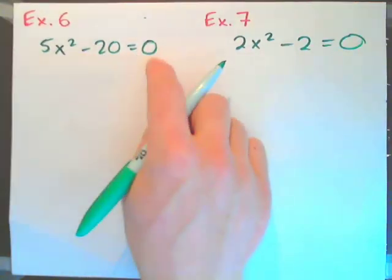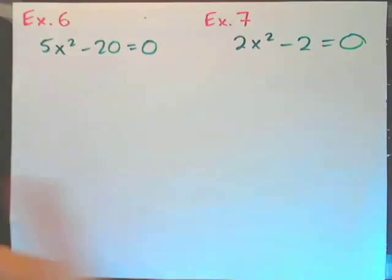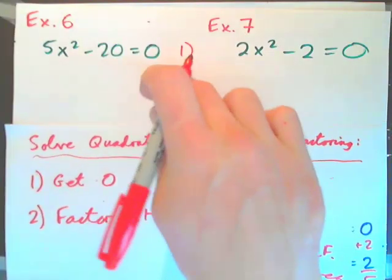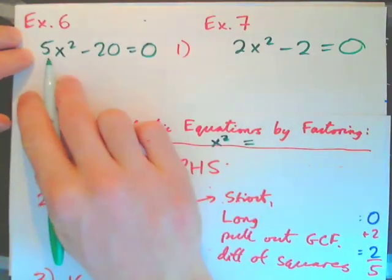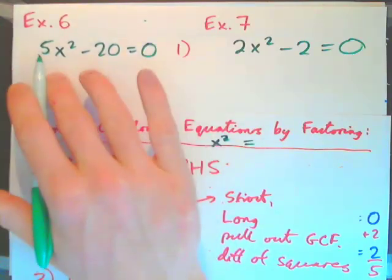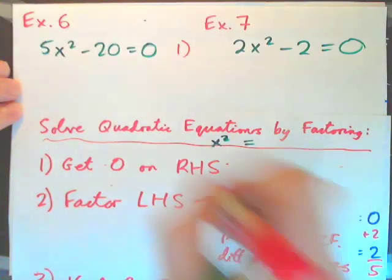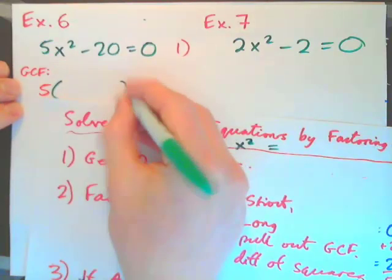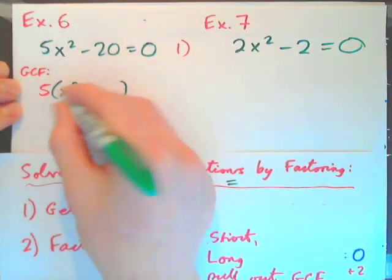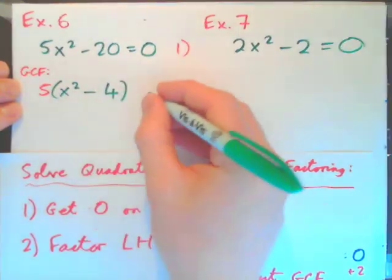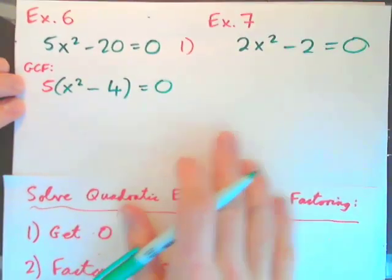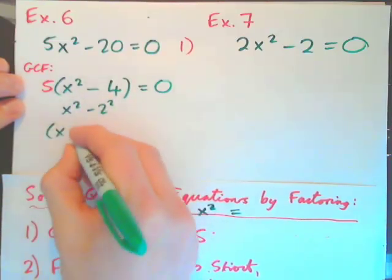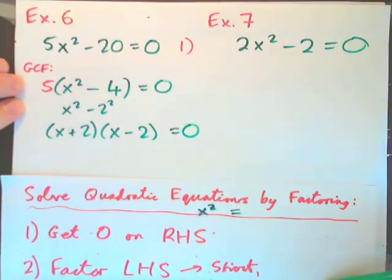Example 6: 5x squared minus 20 equals 0. We already have 0 on one side. To factor the left-hand side, whenever you can pull out a greatest common factor, do it. The greatest common factor is 5, giving 5 times x squared minus 4 equals 0. Now factorize x squared minus 4, which looks like a difference of squares: x plus 2 times x minus 2. So we have 5 times x plus 2 times x minus 2 equals 0.